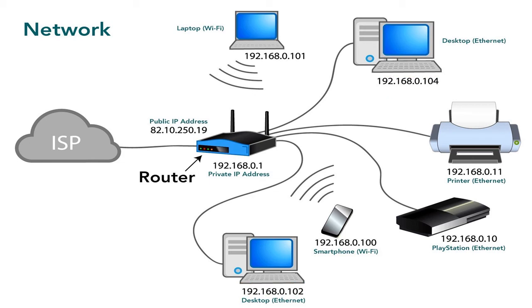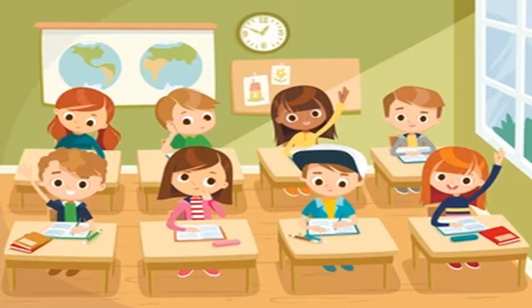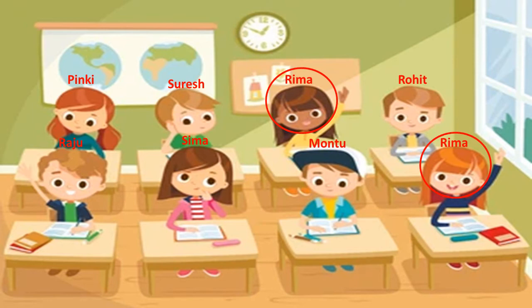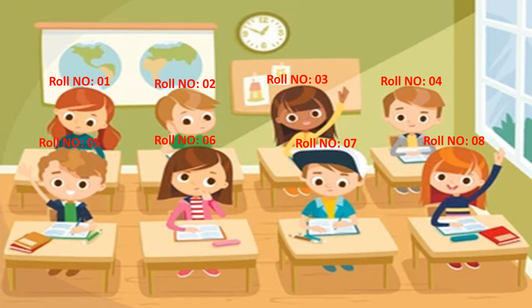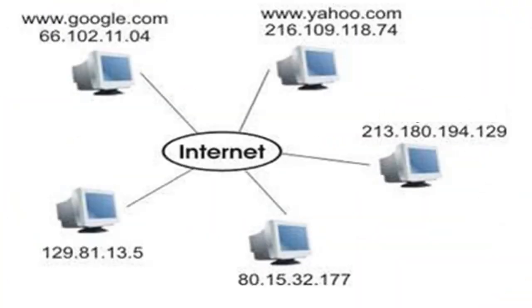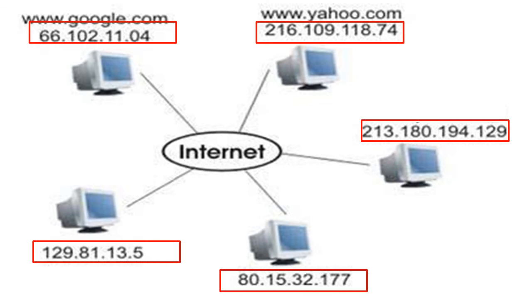All networking devices have a unique identity over the computer network. How do we search a student in a class? By the student's name — but sometimes two or more students have the same name, causing ambiguity. This is solved by a unique roll number given to every student. If you call the roll number, only that individual student appears and responds. Same in the computer network: each and every device has a unique set of numbers called an IP address, which lets us identify the intended networking device over the network.